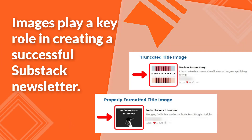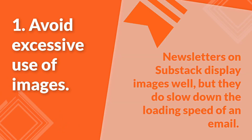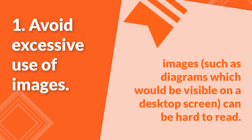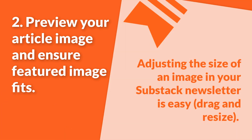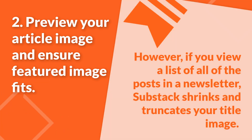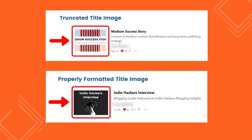Number 6: Images. Images play a key role in creating a successful Substack newsletter. First, avoid excessive use of images. Newsletters on Substack display images well, but they do slow down the loading speed of an email. If a reader is checking their email on a mobile device, images such as diagrams, which would be visible on a desktop screen, can be hard to read. Second, preview your article image and ensure the featured image fits. Adjusting the size of an image in your Substack newsletter is easy — just drag and resize. However, if you view a list of all the posts in a newsletter, Substack shrinks and truncates your title image, so it is imperative that you preview your image before publishing.